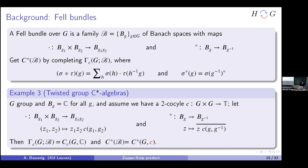The 2-cocycle twisted groups are interesting in their own right and at the moment have nothing to do with the Zappa-Szép product — I'm just motivating why Fell bundles are a good class of objects. They are complicated, but they generalize many constructions at once. The 2-cocycle twists the C*-algebra, not the group itself.